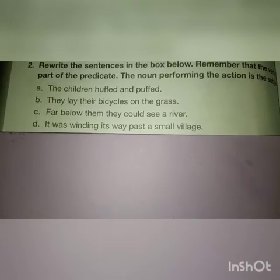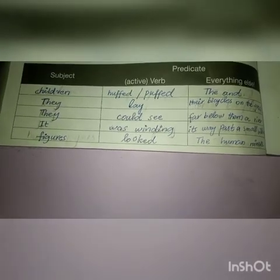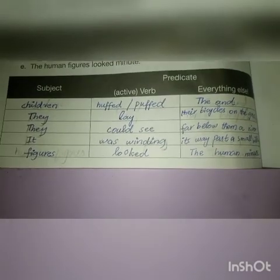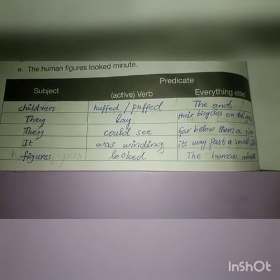'It was winding its way past a small village' — 'it' is the subject, 'was winding' is the verb, and 'its way past a small village' is the part of the predicate. 'The human figures looked minute' — 'figures' is the subject, 'looked' is the verb, and 'the human, minute' is the rest of the predicate.